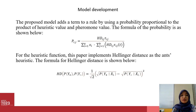For the heuristic function, this paper implements Hellinger distance as the ACO heuristic. The formula for Hellinger distance is shown below, where HD(P+, P-) is confined between 0 and the square root of 2. Hellinger distance is also symmetric and positive.